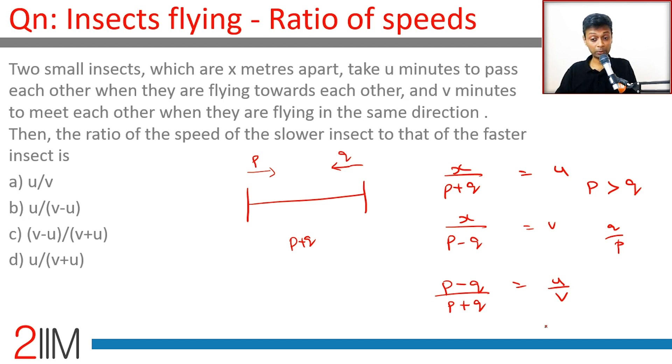We want to find q by p. Divide by p throughout or do componendo-dividendo, so if we add and subtract, p minus q plus p plus q by p minus q minus p minus q, we get 2p by 2q.